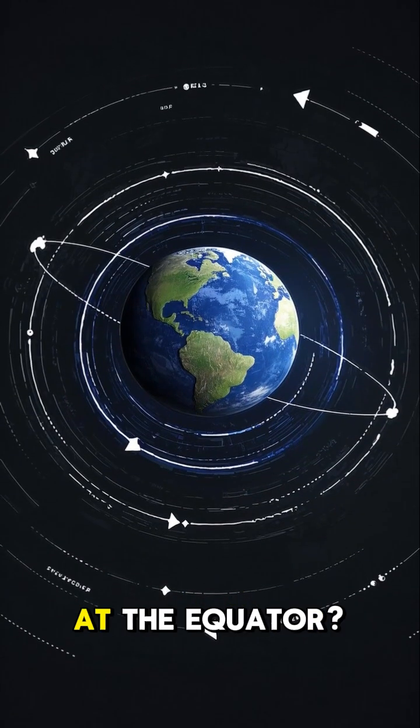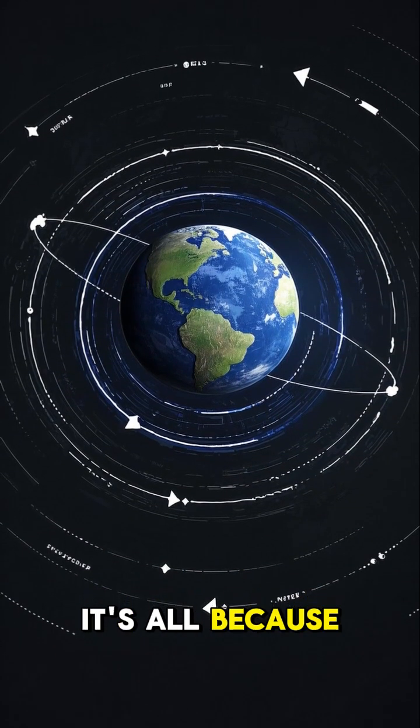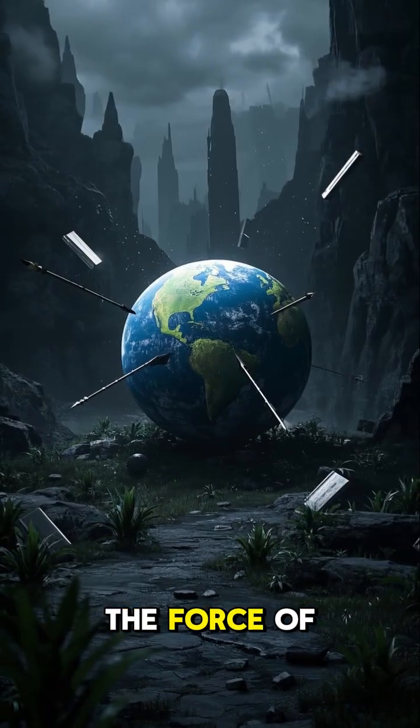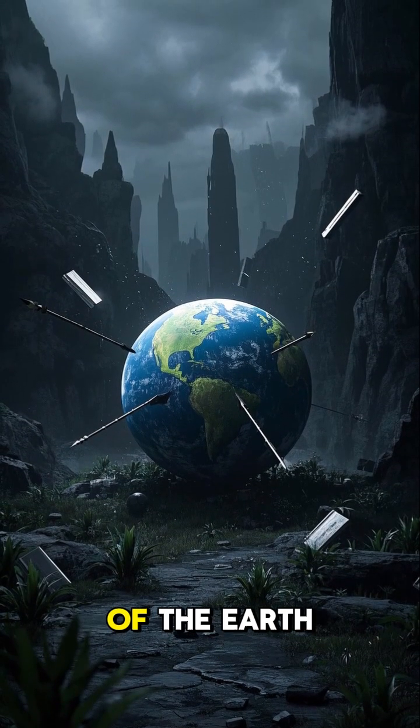So why is the Earth wider at the equator? It's all because of gravity. The force of gravity pulls everything towards the center of the Earth.